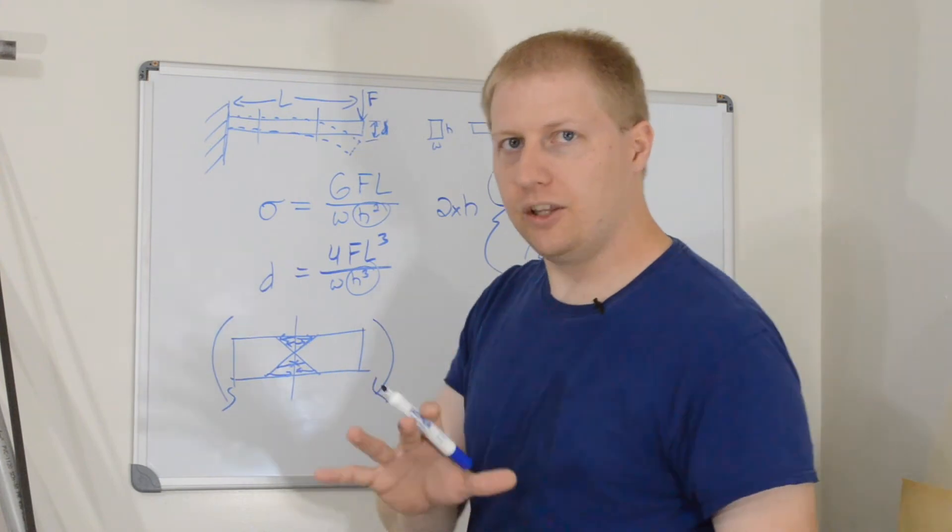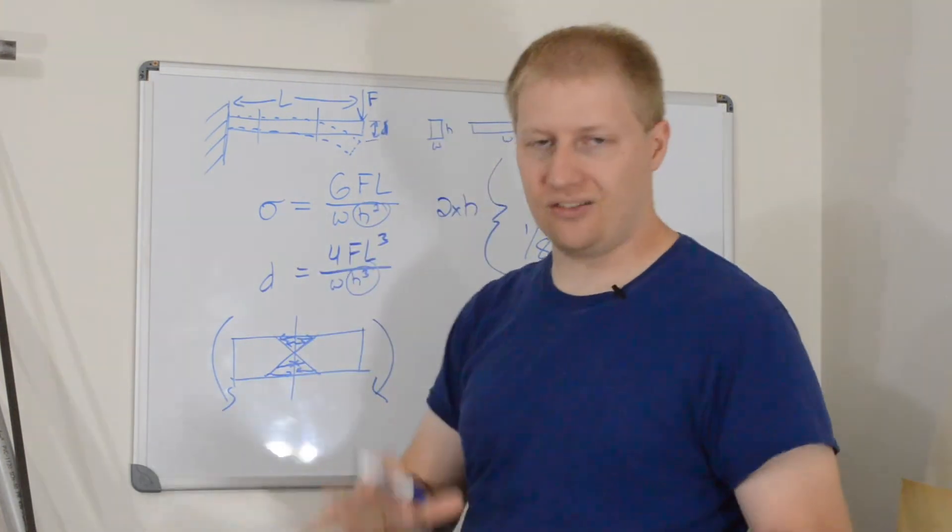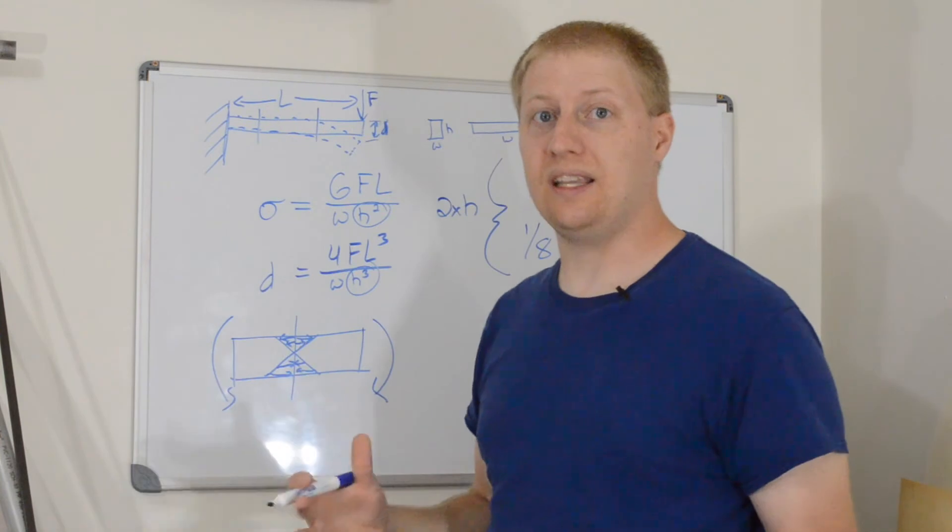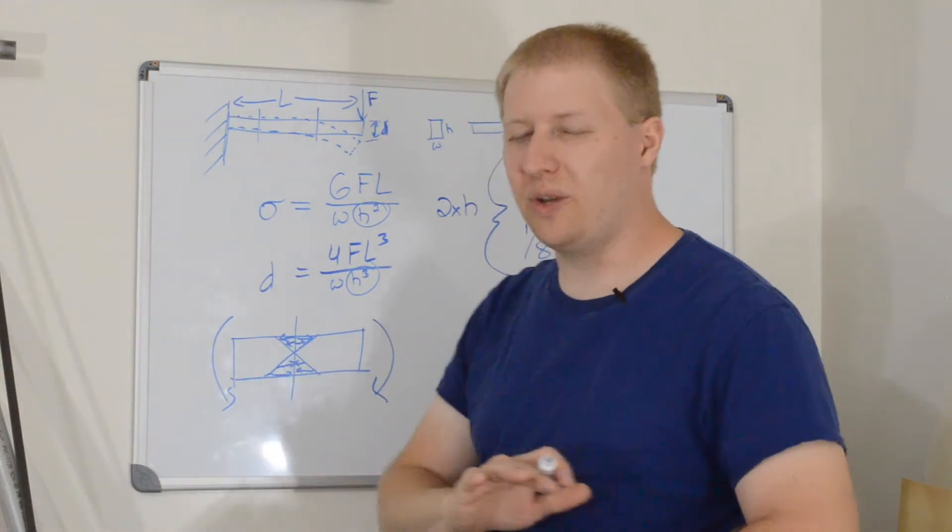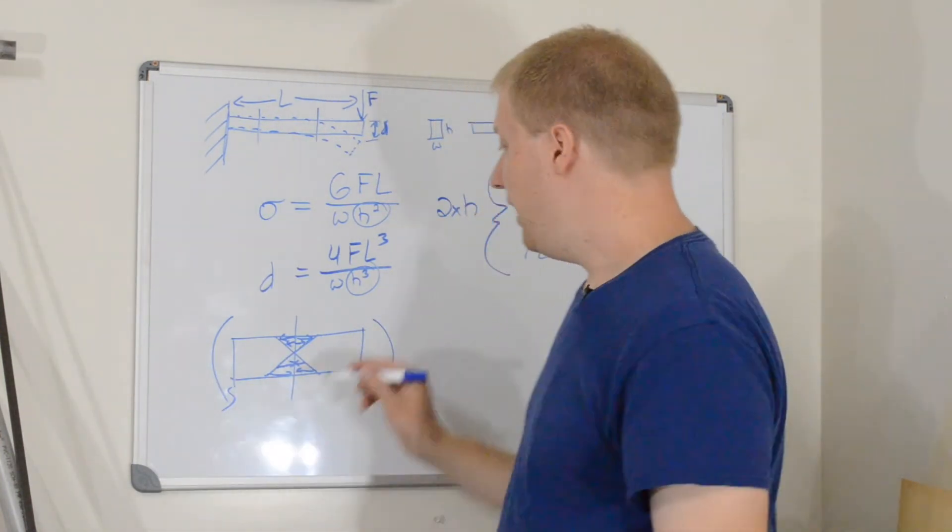Now, that's not completely true because it is taking some shear, but that's very minimal. When you're talking about bending a beam, really, the top and the bottom are doing all of the work. And so, what we could do, if we wanted to make this beam lighter,